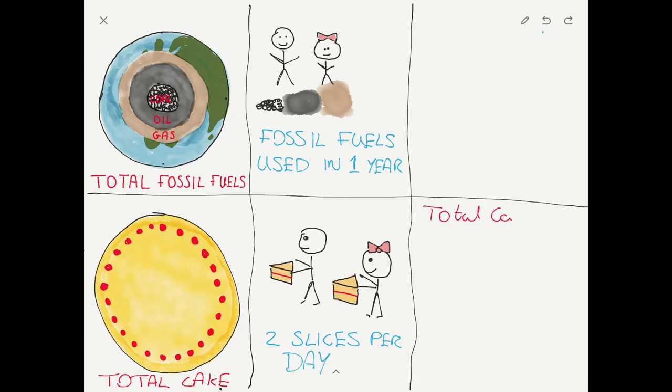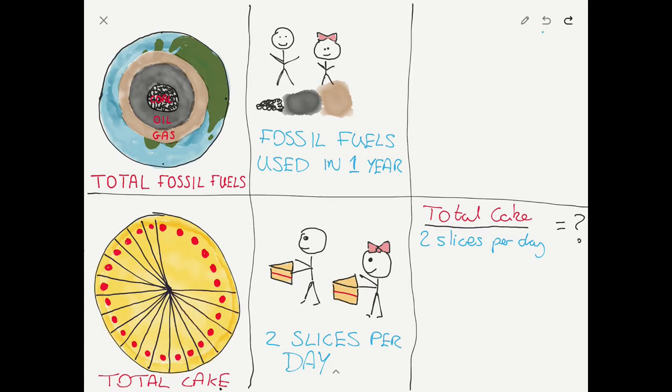Yeah. So if we know the total number of slices in the cake and we divide through by the amount we eat each day, we will get the number of days of cake. We've got 24 pieces of cake. We eat two pieces per day. So I think we've got 12 days of cake.